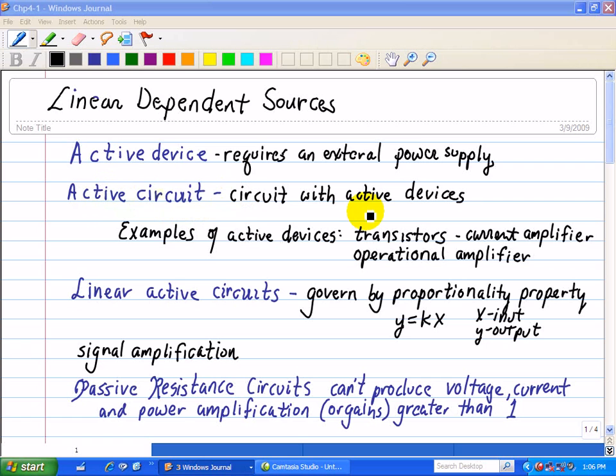An important property of active circuits is that they are capable of providing signal amplification. Examples of active devices are transistors, which act as current amplifiers, and operational amplifiers, which simulate many mathematical operations such as integration, differentiation, adders, subtractors, etc.